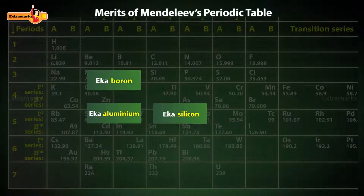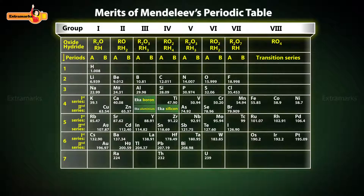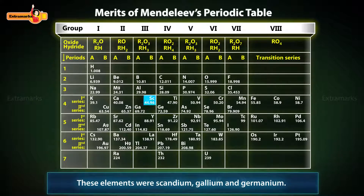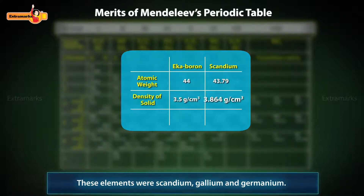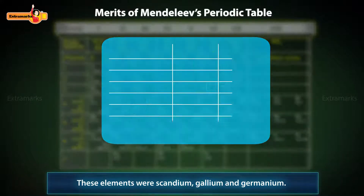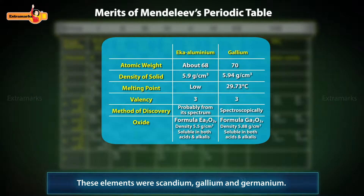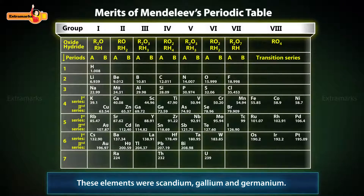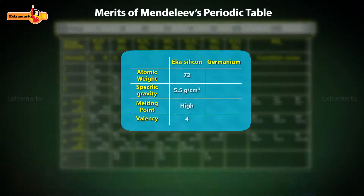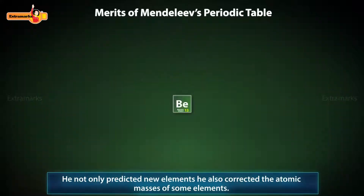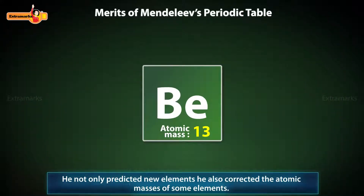He designated these elements as Eka Boron, Eka Aluminium, and Eka Silicon. These elements were discovered years later and are now known as Scandium, Gallium, and Germanium respectively. Their properties were similar to what Mendeleev predicted. He not only predicted new elements, he also corrected the atomic masses of some elements.